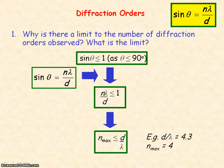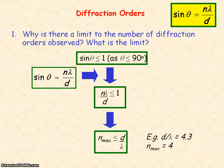That means we'll only observe 9 maxima: the central maximum when n equals 0, and then the 1st, 2nd, 3rd and 4th maxima from both sides of the central maximum.